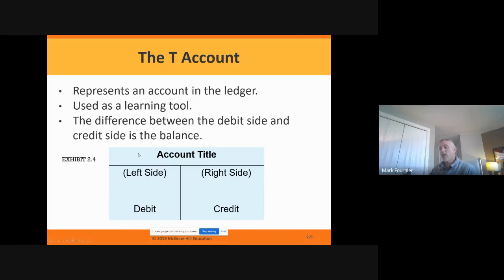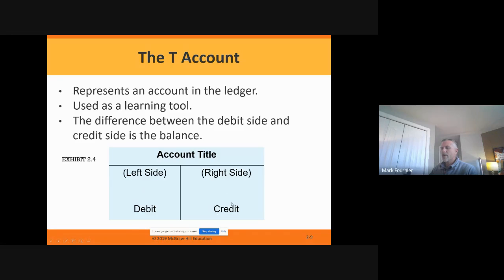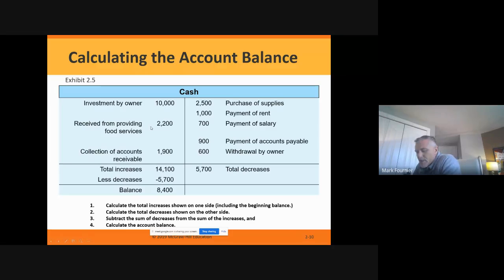The account title could be cash, accounts receivable, supplies, accounts payable, owner's investment, owner's withdrawals, sales revenue, unearned revenue, prepaid expenses — whatever the case may be. No matter what kind of account, debits are always going to be on the left-hand side and credits always on the right-hand side. It's called a T-account because we've got the top bar and the vertical bar, so it looks like a T. We put the account name up top.